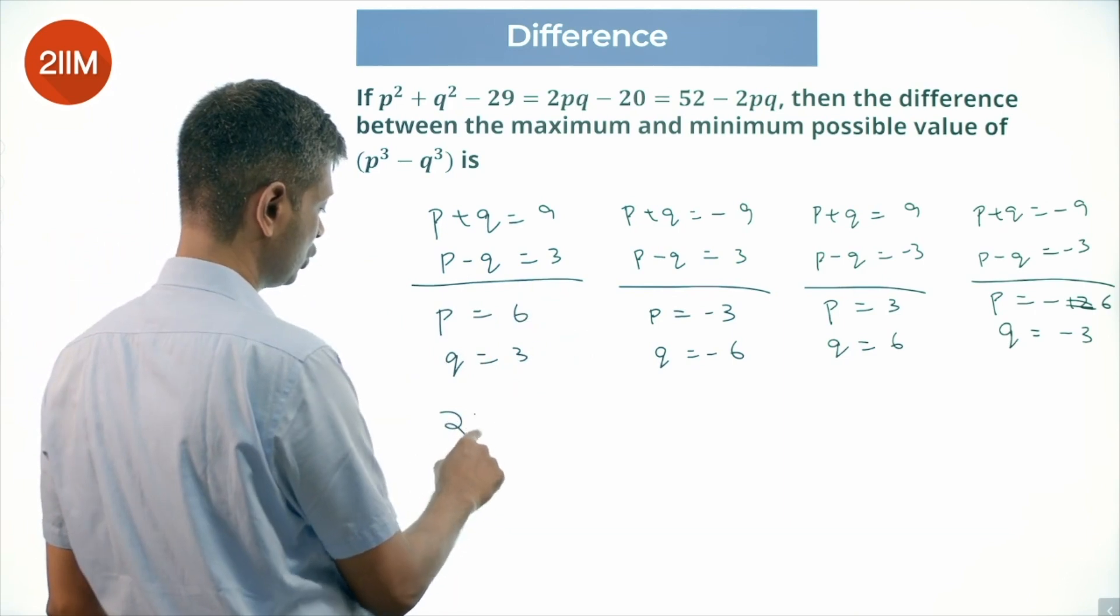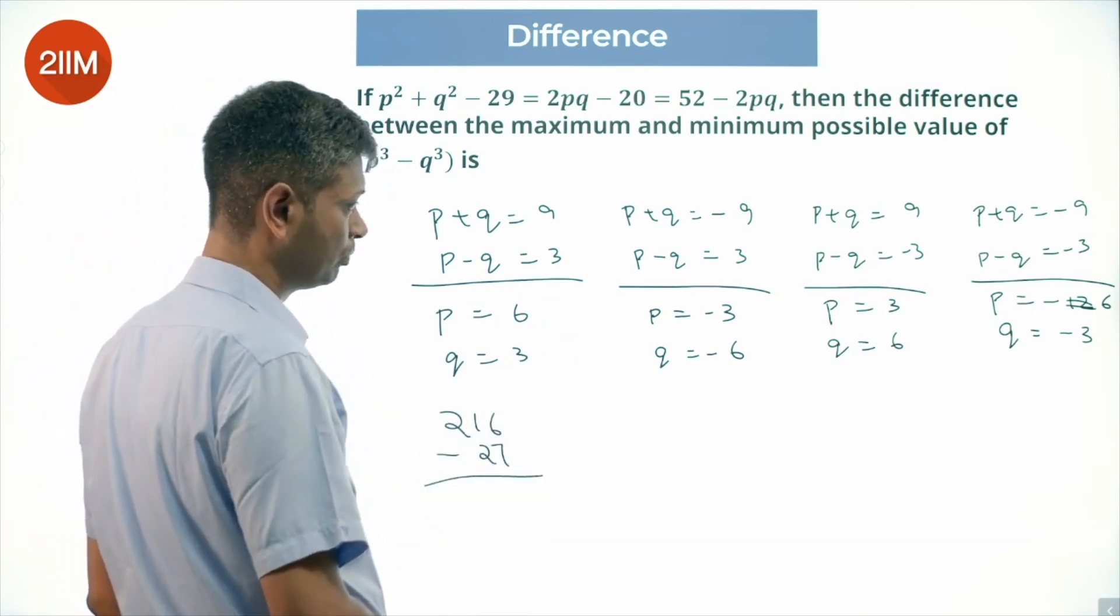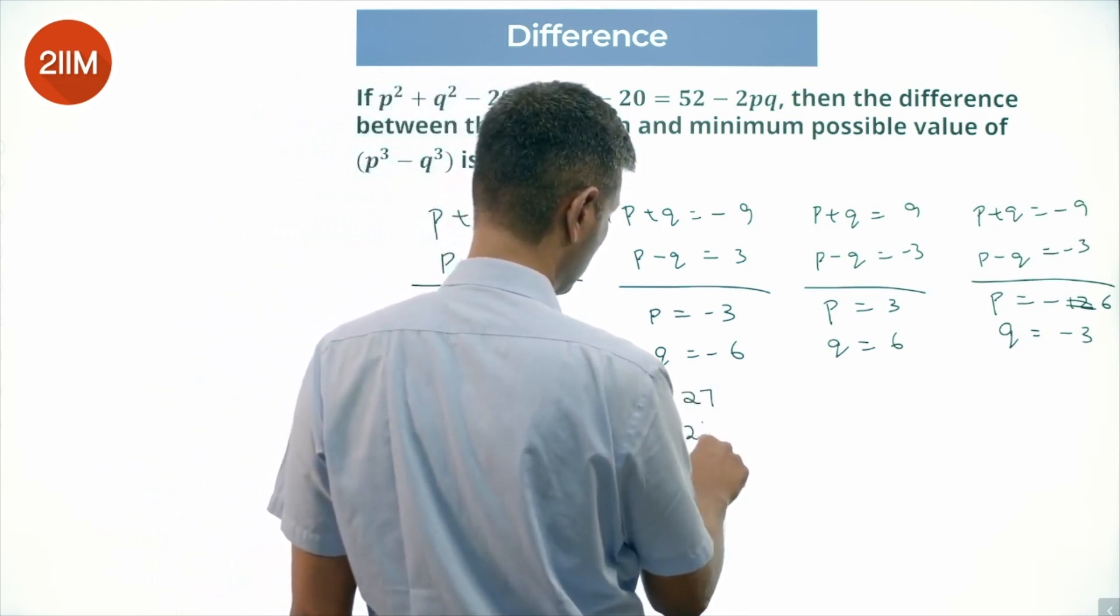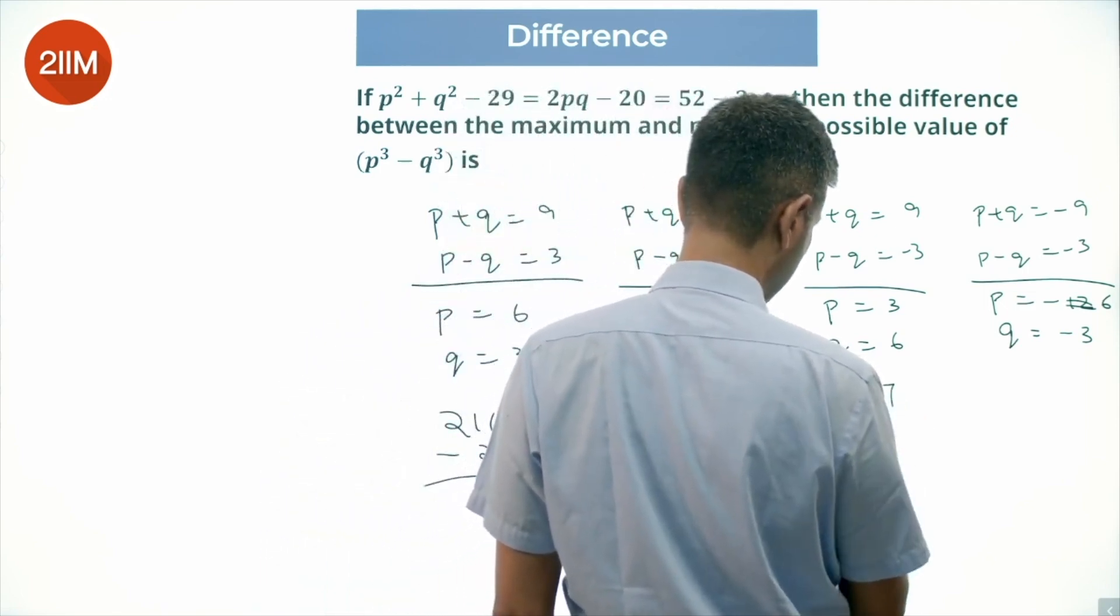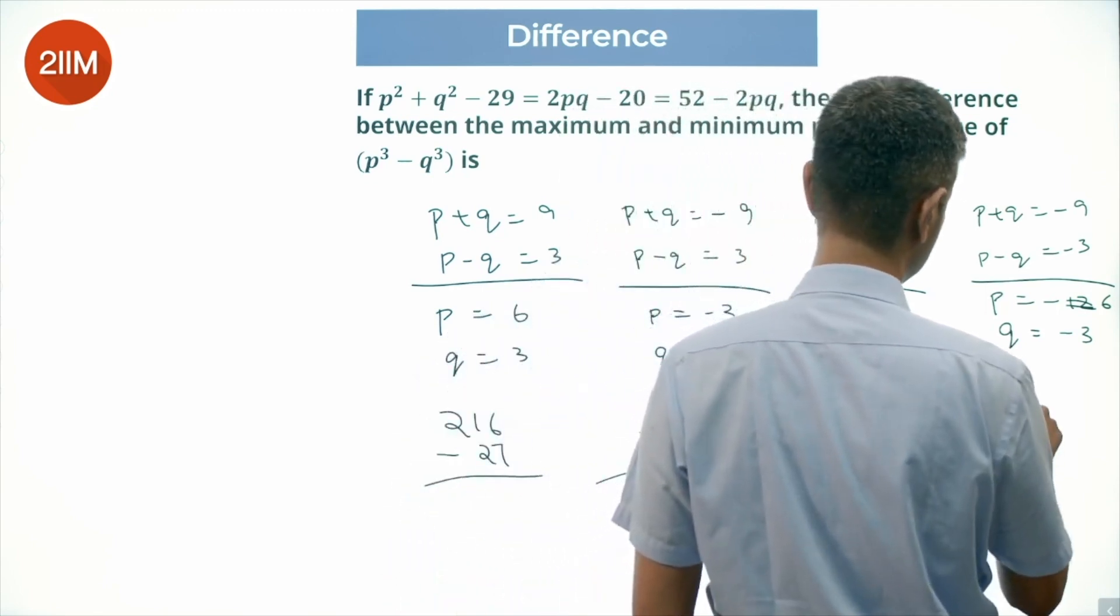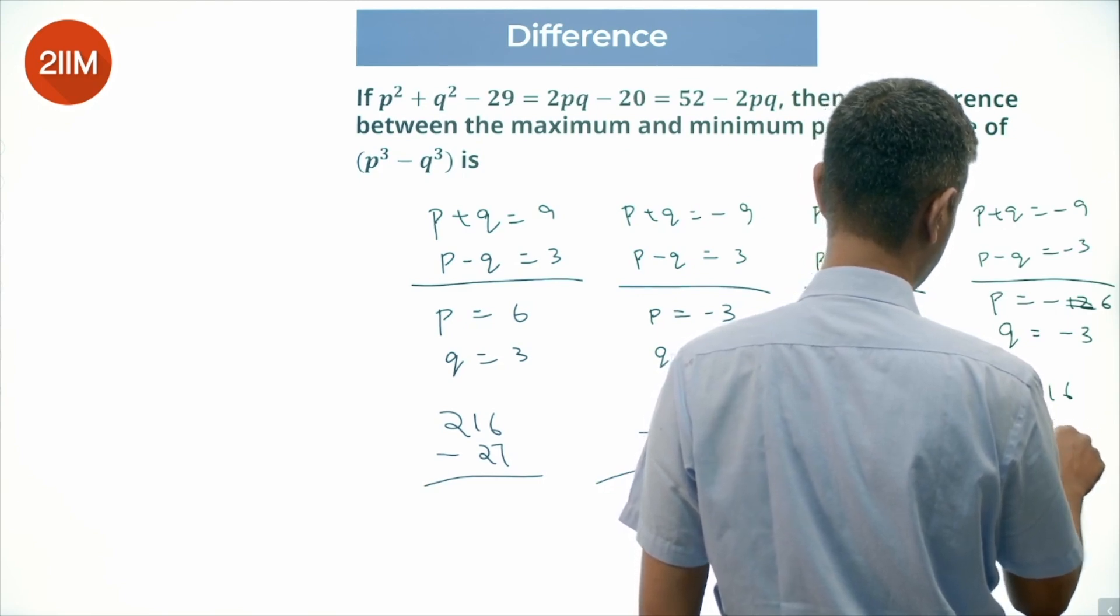We are looking at 216 minus 27. This is minus 27 minus 216, this is 27 minus 216 minus 216 minus 27.